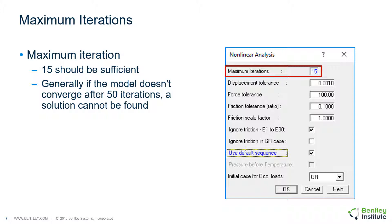Generally, if the model does not converge after 50 iterations, a solution cannot be found, and reviewing the model log file will show bearing force and displacement convergence errors at a particular support, which may be the reason for the non-convergence.